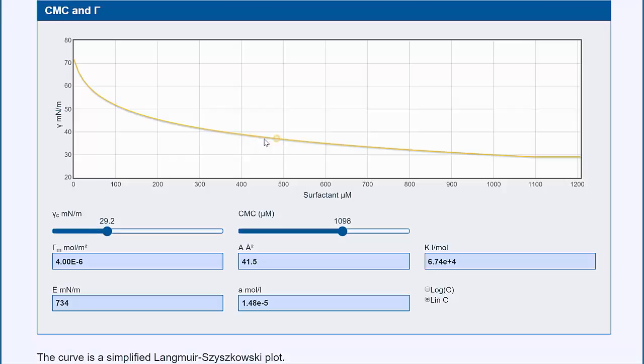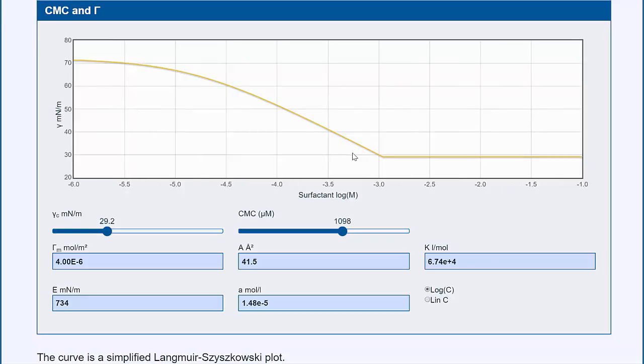All the action is much earlier on, and we tend to dismiss this early action and focus only on the CMC. This plot is a Langmuir-Szyszkowski plot, and from it you can extract some really important numbers, much more important than CMC itself.